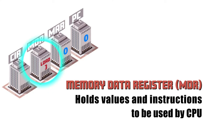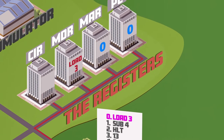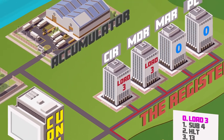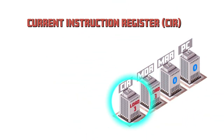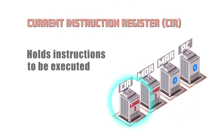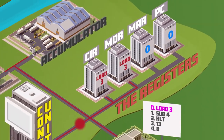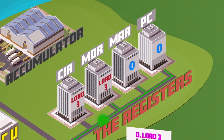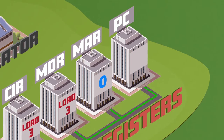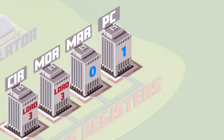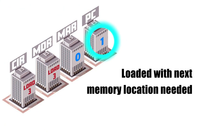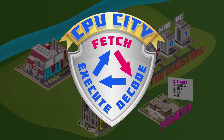The memory data register also holds values while they are waiting to be sent to the memory. As 'load three' is an instruction, it's automatically copied from the memory data register into the current instruction register, which holds instructions ready to be executed. The instruction is finally copied over to the control unit. Before it completes the fetch stage, the control unit sends out an instruction to increment the address in the program counter, moving it up one digit, so that once the fetch-decode-execute cycle is complete, the program counter will be loaded and ready with the next memory location it needs to start the next cycle. And with that, the fetch stage is complete.